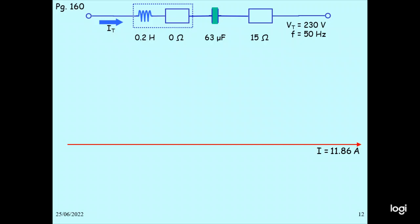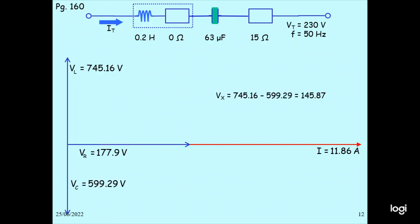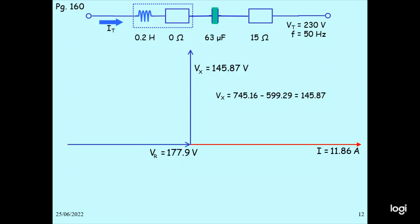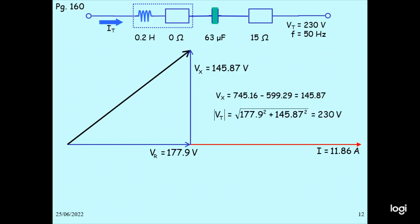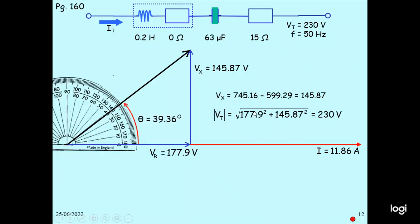This is the way we draw the phasor diagram. The inductor is 0.2H, capacitor is 63 microfarad, resistance 15 ohm, and VD equals 230V, so the current is 11.86 amperes. The voltage VR is 177.9V, VL is 745.5V, and VC is 599.29V. VL minus VC equals 745.5 minus 599.29 equals 145.86V. The applied voltage V equals the square root of 177.9 squared plus 145.87 squared, giving approximately 230V. This angle is measured as approximately 39 degrees.